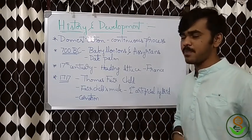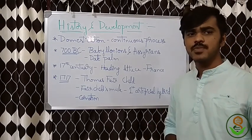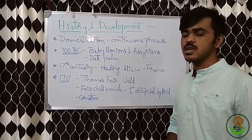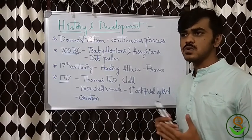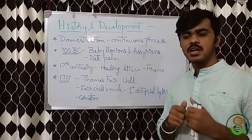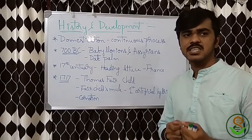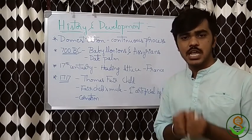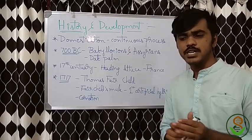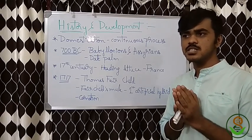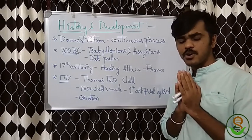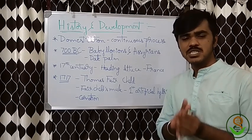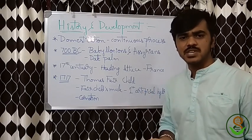History means from the ancient period, plant breeding has many branches. Domestication is a very important one, along with selection. In the historical point of view, plant breeding started with domestication itself. Domestication means it's an artificial selection.